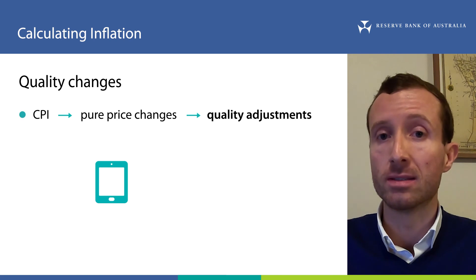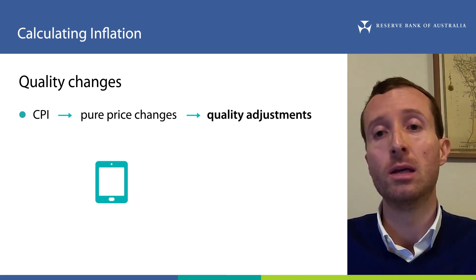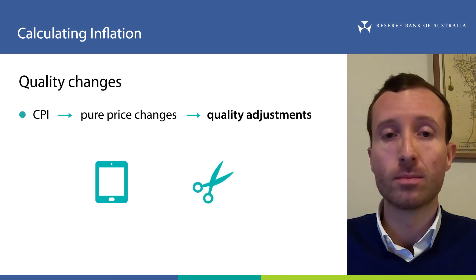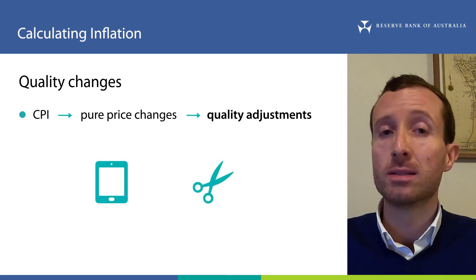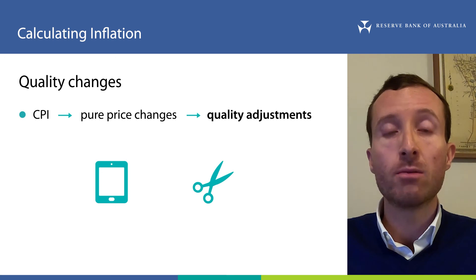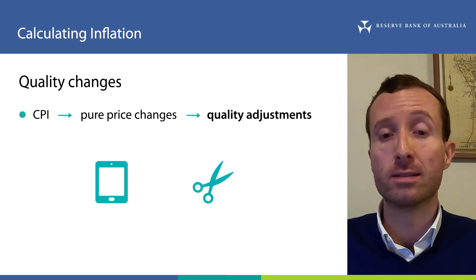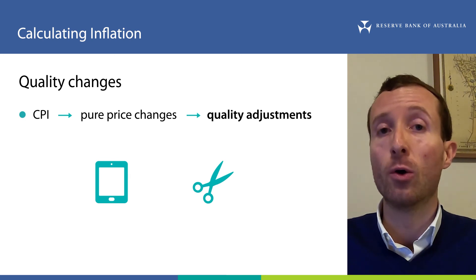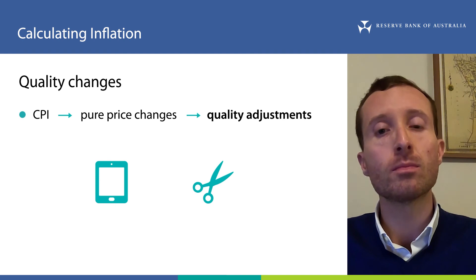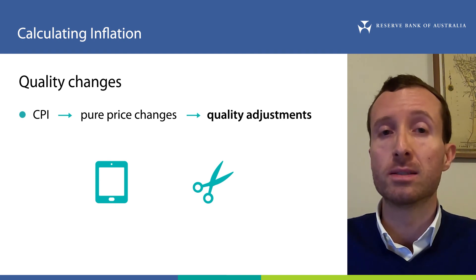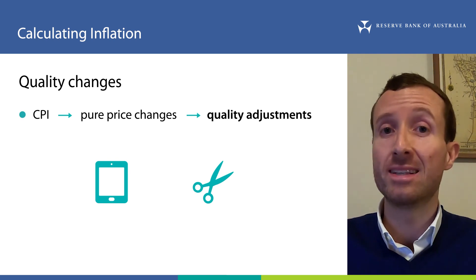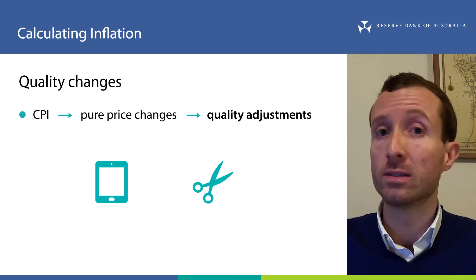Quality adjustments for services are particularly difficult to measure. For example, how do you measure the value of an improved haircut? Because these adjustments are only estimates, they can result in under or overestimation of the pure price changes, and so under or overestimation of CPI inflation. The size of these adjustments can potentially be meaningful for some items, for example high-tech items, which are continuously improving.